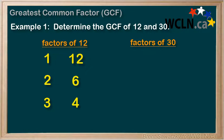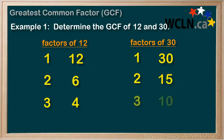Moving over to 30, we'd have the factors of 1 and 30, 2 and 15, 3 and 10, and 5 and 6. That gives us 4 factor pairs, or a total of 8 factors.